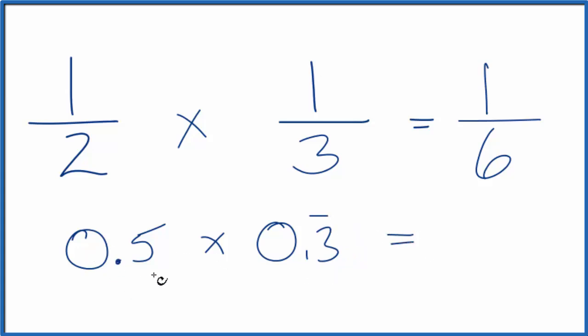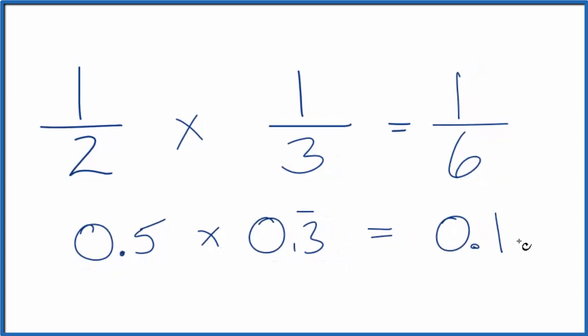And if you multiply 0.5 times 0.3 repeating, you end up with 0.16, and the six just keeps repeating there as well.